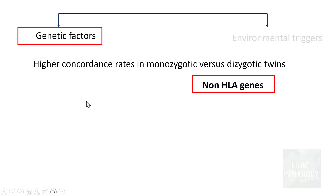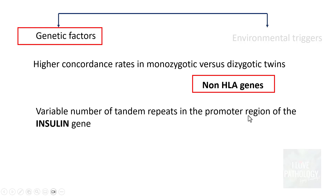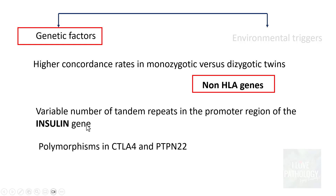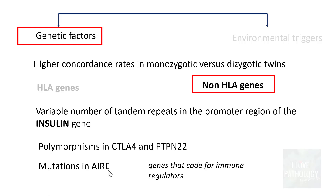Regarding non-HLA genes, there are variable number of tandem repeats in the promoter region of the insulin gene, which is one of the important factors associated with development of type 1 diabetes mellitus. There can also be polymorphisms in CTLA-4 and PTPN22, or mutations in AIRE, the autoimmune regulator gene. AIRE codes for immune regulators, and whenever there is a mutation in AIRE, these individuals are associated with type 1 diabetes.